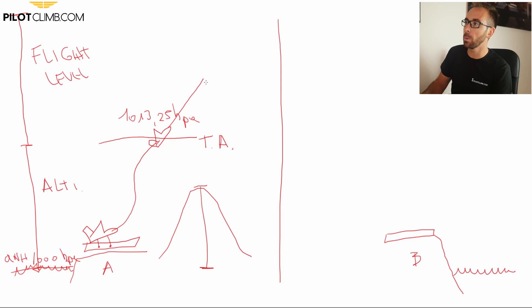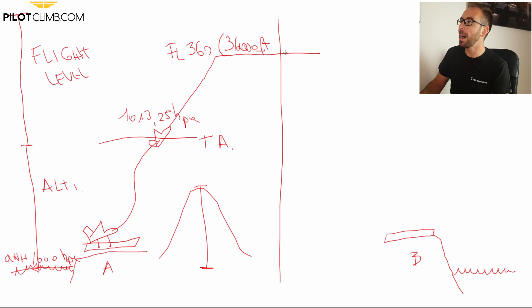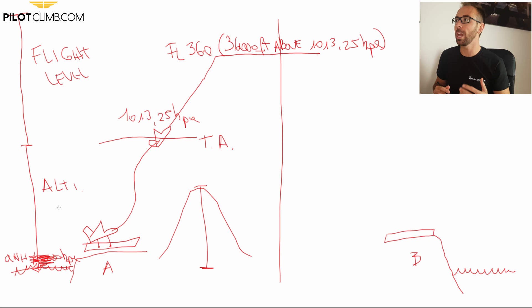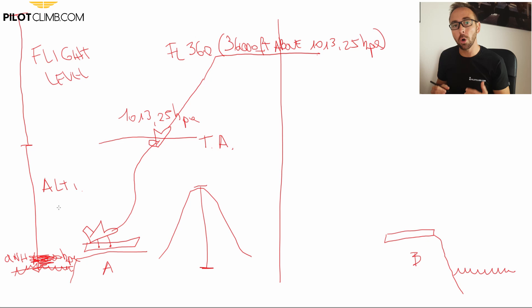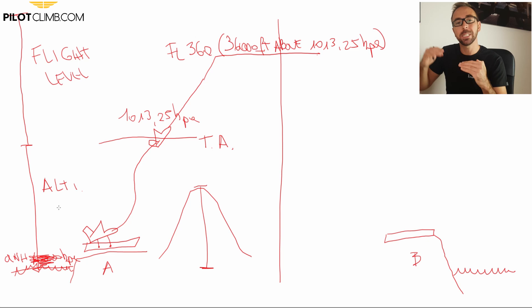So you pass the transition altitude, fly flight levels, reach your cruise altitude, and keep climbing using flight levels. Flight Level 360 means you are 36,000 feet above the 1013.25 hectopascal reference. During cruise at FL360, you have 1013.25 set and you're confident that everybody else is using that same reference. So if there's an aircraft ahead at FL370, you know it's 37,000 feet above the same 1013.25 hectopascal — meaning you are separated by exactly 1,000 feet.